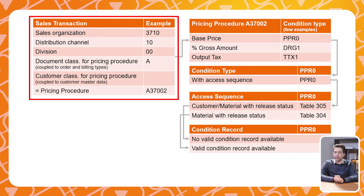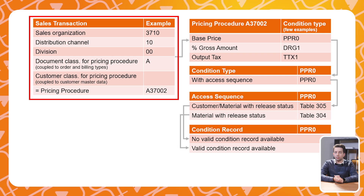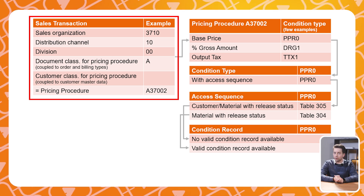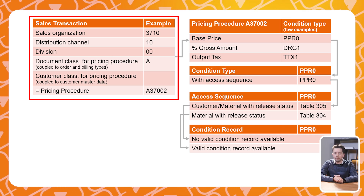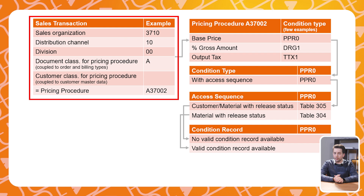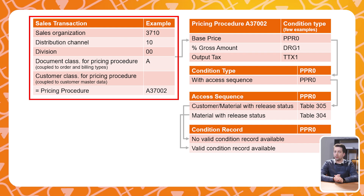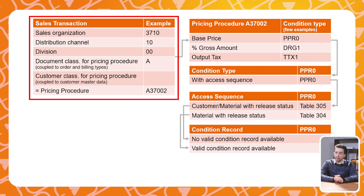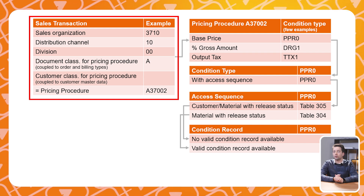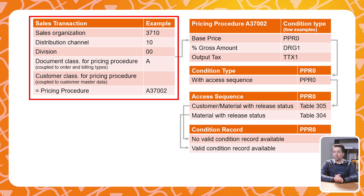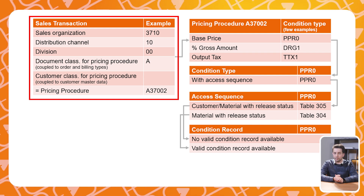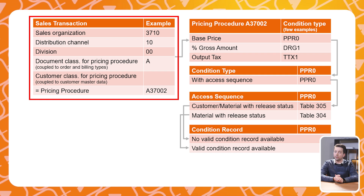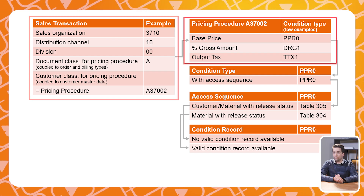In Sales & Distribution, pricing refers to the process of determining the prices of products or services during sales transactions. For example, you create a sales order for Sales Organization 3710, Distribution Channel 10, Division 00 for a customer without a specific classification for pricing procedure. Based on this sales transaction, SAP then determines the pricing procedure.